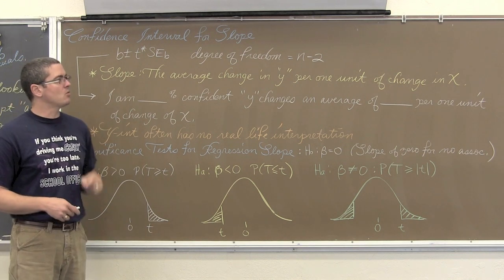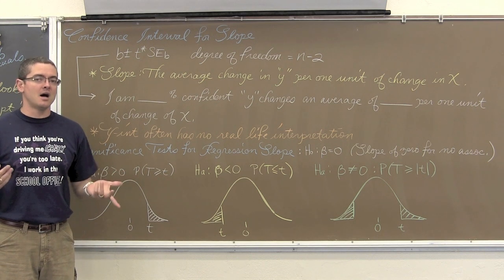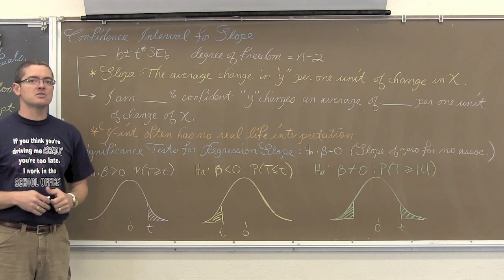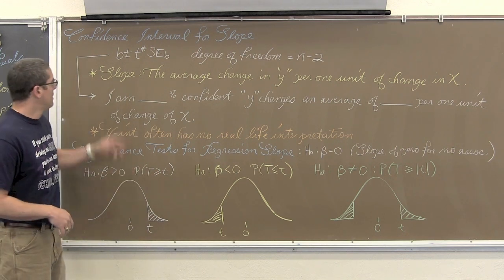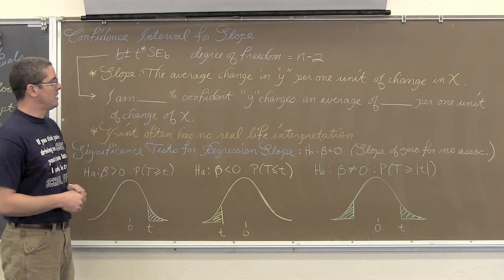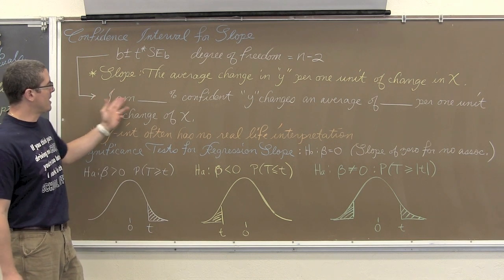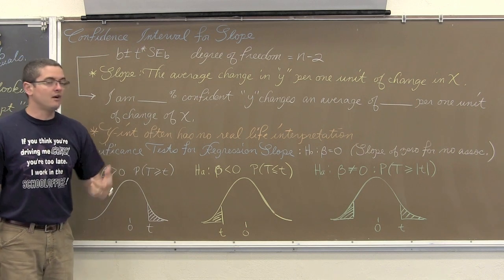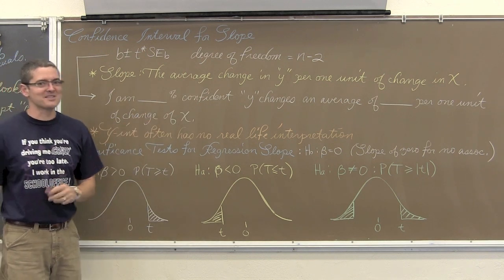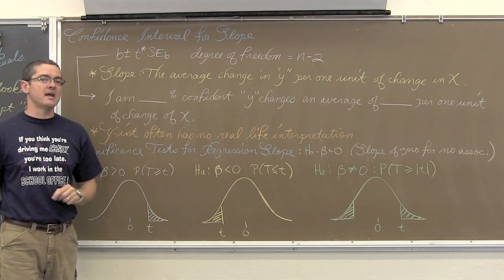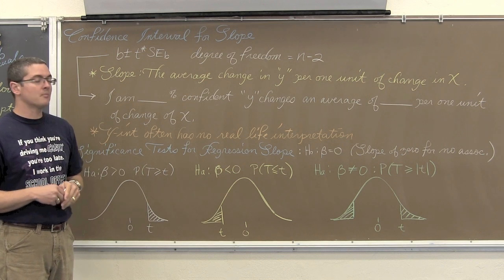The slope is the average change in y per one unit of change in x. The definition of slope as rise over run is great for algebra, but when interpreting the slope of a regression line in statistics, we use: average change in y per one unit of change in x. Once you set up your confidence interval, you say: I am blank percent confident that y changes on average by blank units per one unit of change in x. The y-intercept often has no real life interpretation.